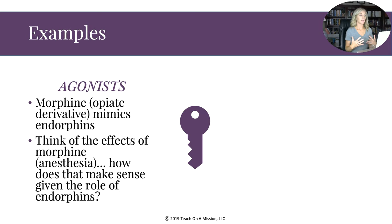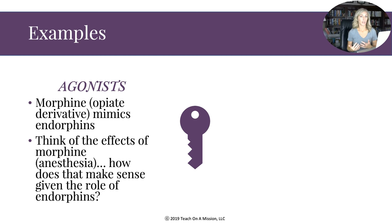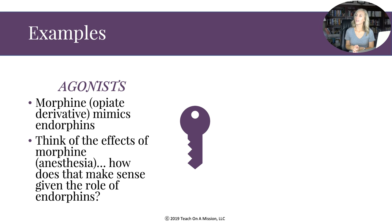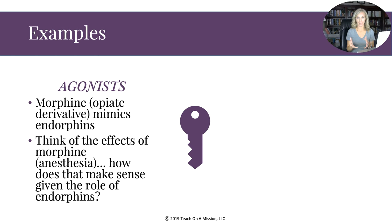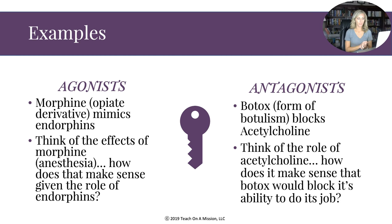An example of an agonist is morphine — an opiate derivative that mimics endorphins. Think of morphine used in surgery for pain control. Endorphins raise your pain threshold and produce positive emotions. Since morphine mimics endorphins, it blocks you from feeling pain. As the movie Legally Blonde puts it: endorphins make people happy — but more accurately, they raise your pain threshold.